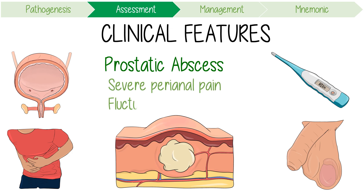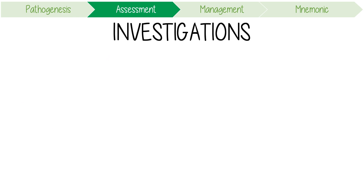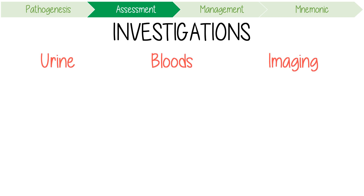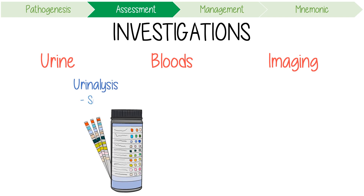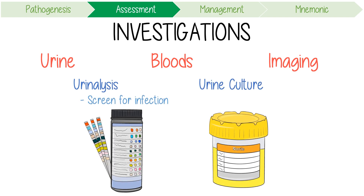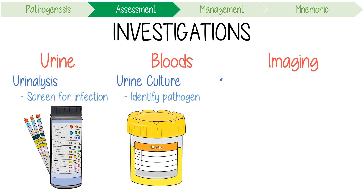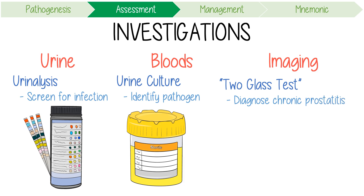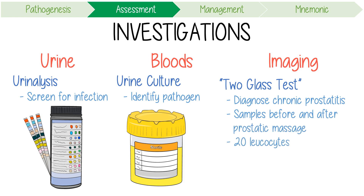Rectal examination might reveal a fluctuant area in the prostate. For investigation, consider a structured approach including urine tests, bloods and imaging. Urine samples allow for urinalysis to quickly screen for infection, and a midstream urine culture to identify the pathogen. Performing the two-glass test can diagnose chronic prostatitis — this involves taking urine samples before and after a prostatic massage, and is diagnostic if there are more than 20 leukocytes per high-powered field on the post-massage sample. Importantly, prostatic massage should never be performed in acute bacterial prostatitis as it can induce bacteremia and sepsis.